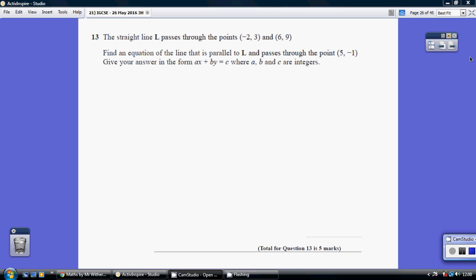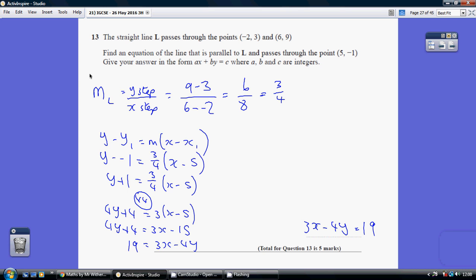Question 13. We've got to find an equation of the line that is parallel to this first line L and passes through a specific point. If it's parallel, it's going to have the same gradient as L. So a good starting point is to work out the gradient of L.